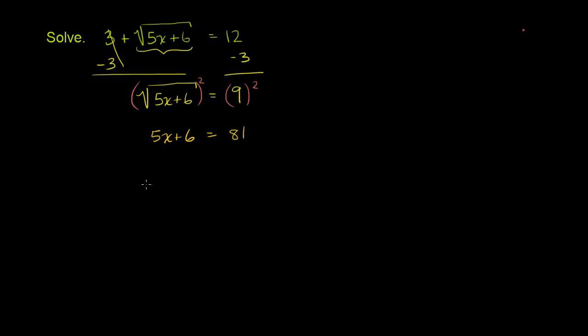And now this is just a straight-up linear equation. We want to isolate the x terms. Let's subtract 6 from both sides. On the left-hand side, we have 5x, and on the right-hand side, we have 75. And then we can divide both sides by 5.